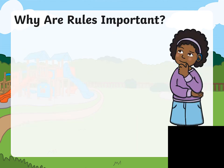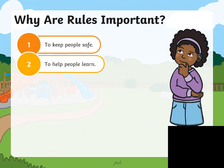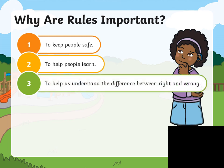But why are rules important? Number one, rules are very important to keep people safe. Number two, to help people learn. If we want to learn we need to follow the rules — for example, the classroom rules — so we are able to learn from our teacher. Number three, to help us understand the difference between right and wrong. When we have rules, we always know what is right and what is wrong.